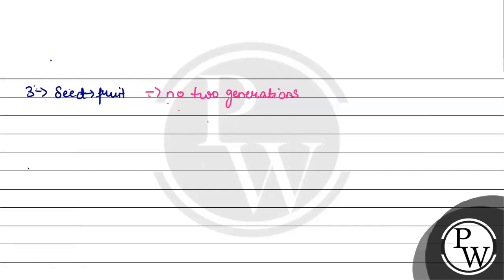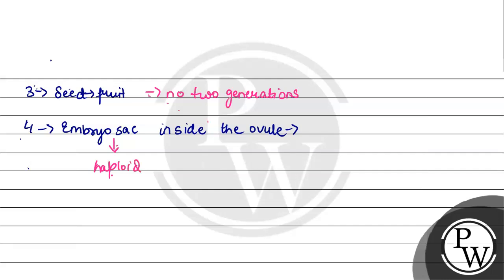Option four: embryo sac inside the ovule. The embryo sac is present inside the ovule, which is one structure within the other — representing two generations present, one within the other.